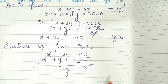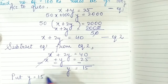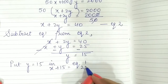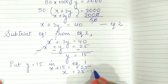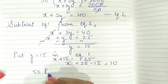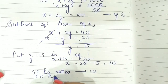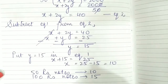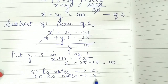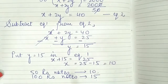Putting y equals 15 in equation 1: x plus 15 equals 25, so x equals 10. Therefore, the number of 50 rupee notes is 10 and the number of 100 rupee notes is 15. Verification: 10 notes of 50 rupees is 500, 15 notes of 100 rupees is 1500, and 500 plus 1500 equals 2000. Answer is correct.